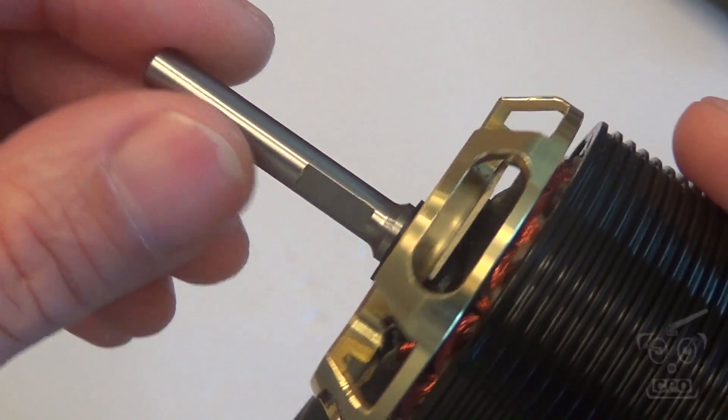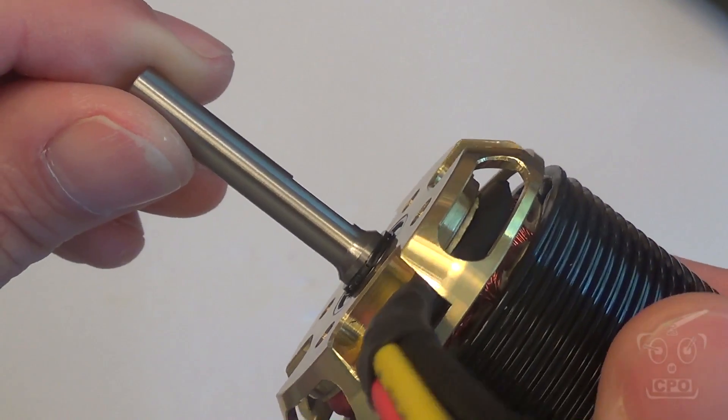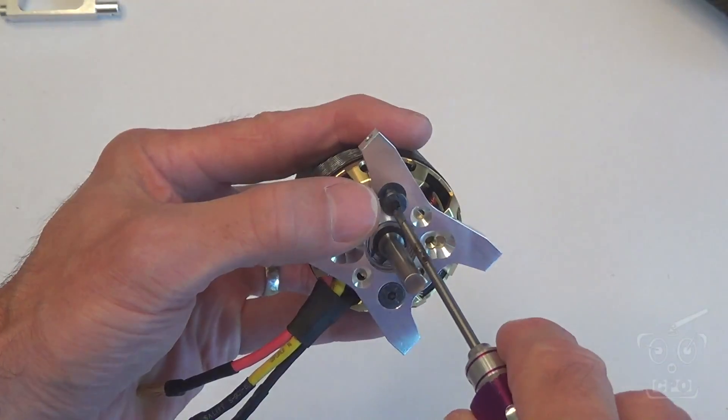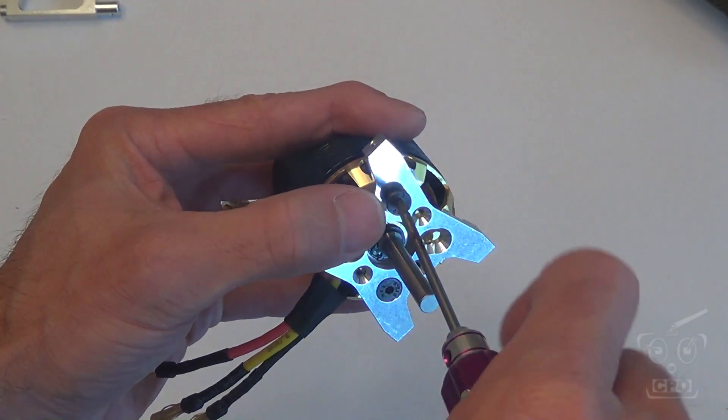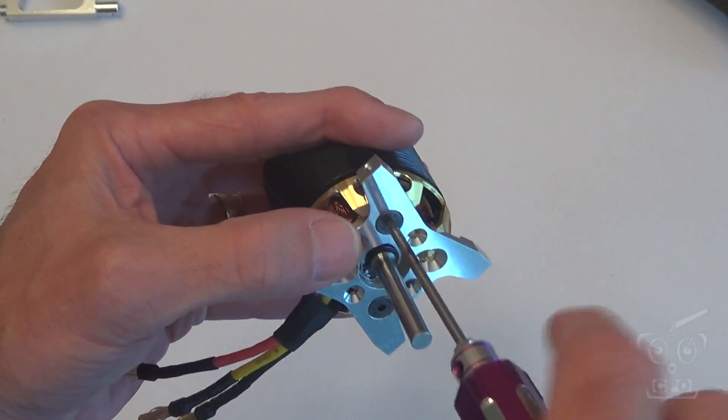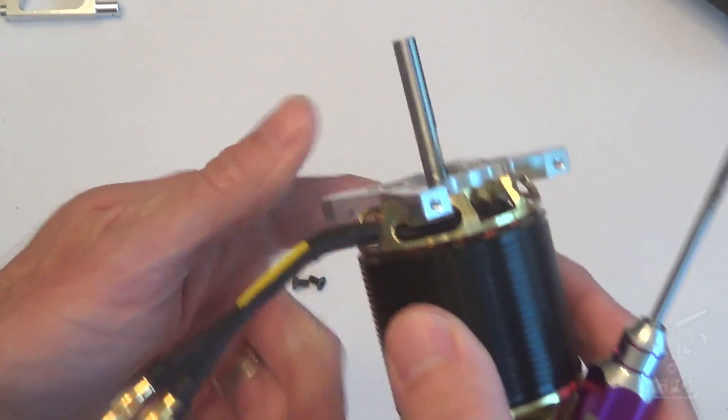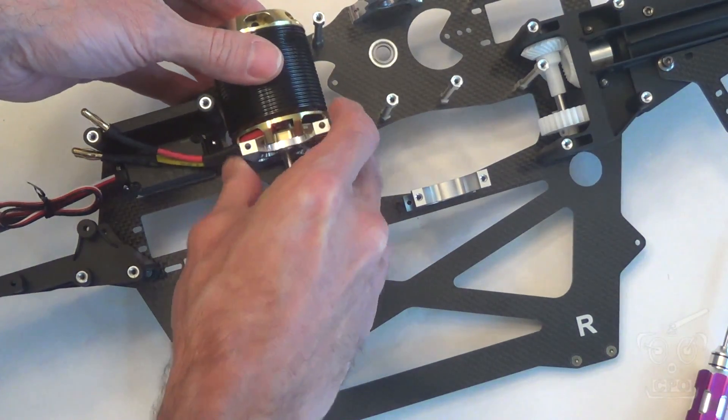So this is my Scorpion motor, and as you can see here, the flat for the pinion is too close to the motor for where I need it for the pinion. So what I'm going to do is affix it to the motor mount with just a couple of screws, not threadlocked or anything, because I want to figure out where that pinion is going to sit so I can grind a new flat.